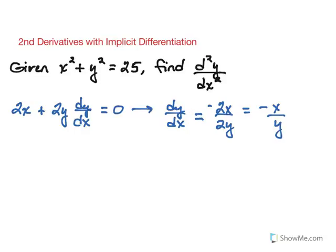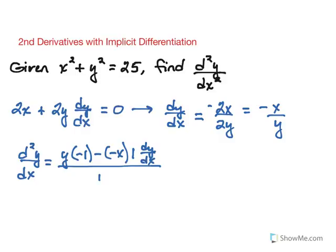To find the second derivative then, we need to employ the quotient rule because we have negative x over y. So using the quotient rule, we would have y times negative 1 minus, now we keep the negative x, derivative of y is going to be 1 dy dx, and that's all over y squared.